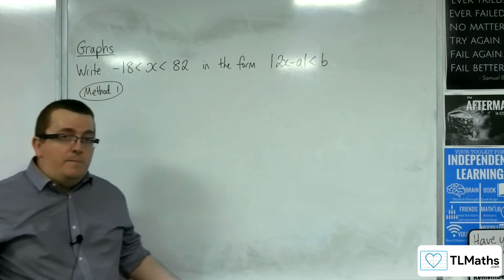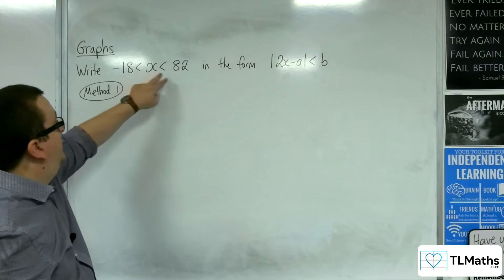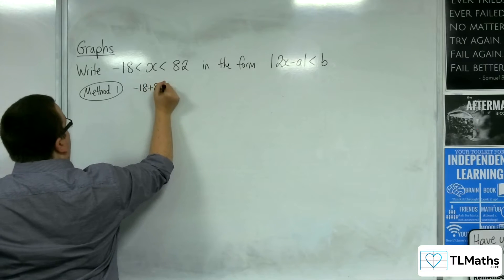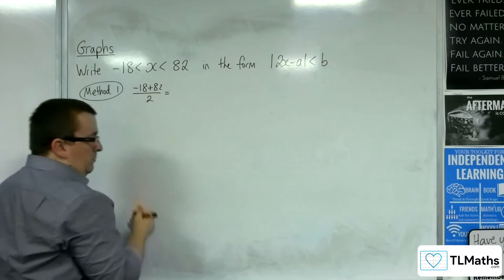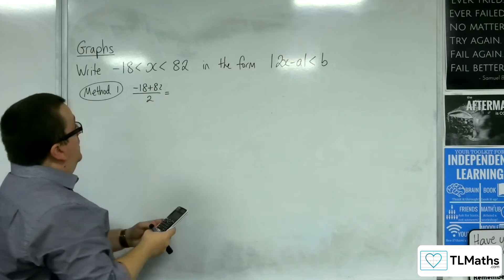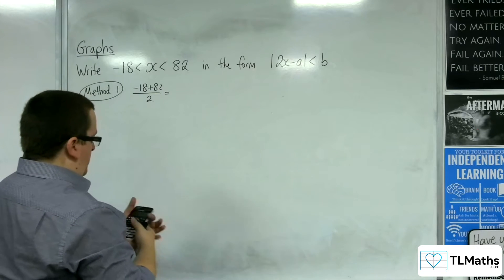The idea would then be that we find the average of the -18 and the 82. So, -18 plus 82 divided by 2. So, -18 plus 82 divided by 2 is 32.